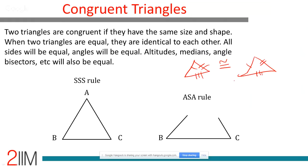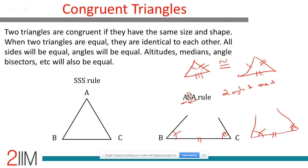The next rule is ASA — Angle-Side-Angle. If two angles and the side in between are equal across two triangles, the two triangles are congruent. Once congruent, the third angle will be equal, the other two sides will be equal, areas, perimeters, inradius, circumradius — everything will be equal. Remember: it is ASA specifically — angle, then the included side, then angle.